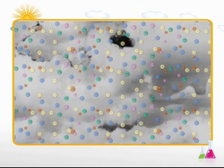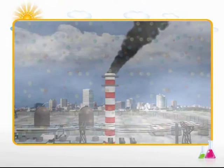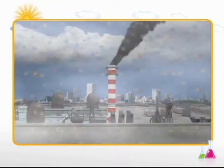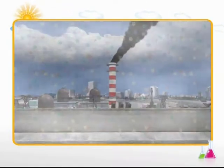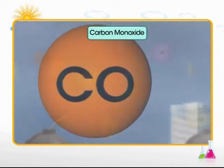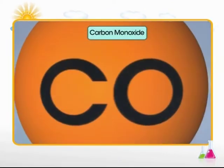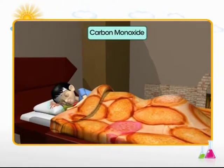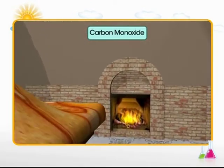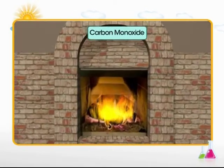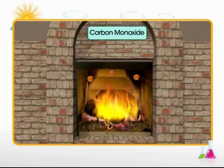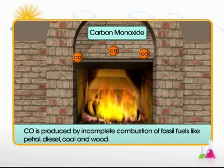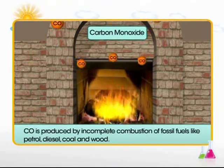Let us learn about each of these air pollutants in detail. We will first learn about gaseous pollutants. Carbon monoxide is an odourless and colourless gas. It is produced as a result of incomplete combustion of carbon-containing fuels, mainly fossil fuels such as petrol, diesel, coal, wood, etc.